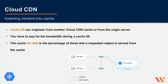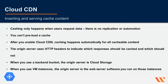The cache hit ratio is the percentage of times that a requested object is served from the cache. Caching only happens with user interaction — when users request data. There is no replication or automation; you can't preload a cache with specific data. After you enable Cloud CDN, caching happens automatically for all cacheable content across your machines. The origin server uses HTTP headers to indicate which responses should be cached and which should not. Cloud CDN uses caches in numerous locations around the world, making it impossible to predict whether a particular request will be served from cache.